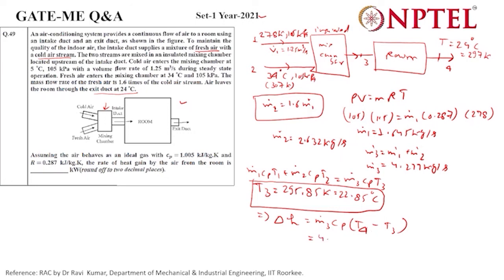When we calculate, we know m3, cp, T4, and T3. We will put all values: 4.277 times 1.005 times (T4 is 24 degrees Celsius minus T3 which is 22.85 degrees Celsius). When we calculate this, it becomes 4.9594 kilowatts. This is how much heat our air is taking from the room.